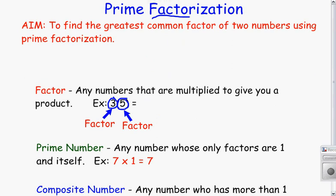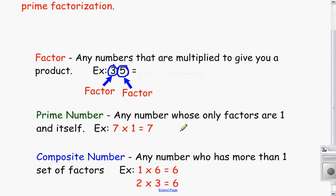Another important piece of information is prime and composite numbers. A prime number is basically any number whose only factors are 1 and itself. 7 is a good example of a prime number. The only way I can get an answer of 7 with multiplication is to multiply 7 times 1.